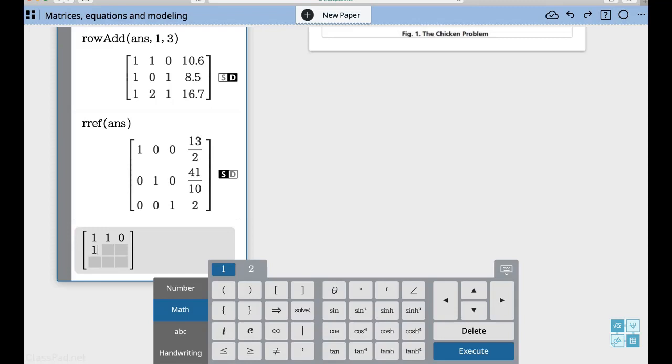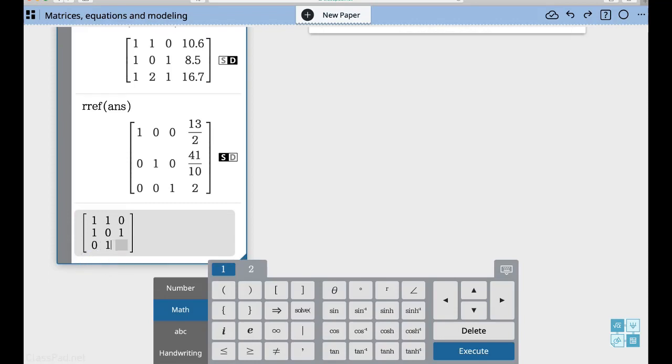Oops, let me get the right one here. One, zero, one. And then finally my last row, zero, one, one. That's my original matrix.